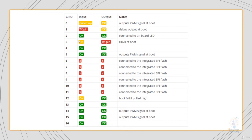Pin 3 is okay to use as input, but you can't use it as output. It's high at boot, so it will read one at boot. Pin 4 and 5 are okay to use as input or output, and pin 5 also outputs a PWM signal at boot. Pins 6 to 11 are connected to the integrated SPI flash, so you can't use them as input or output.